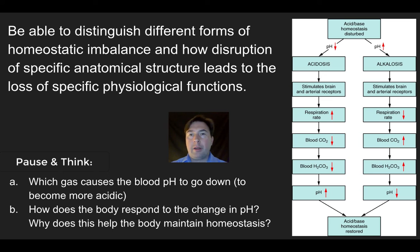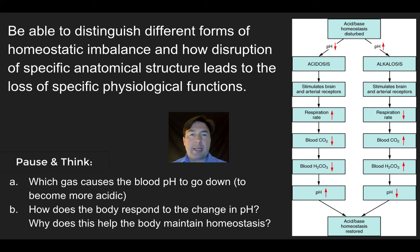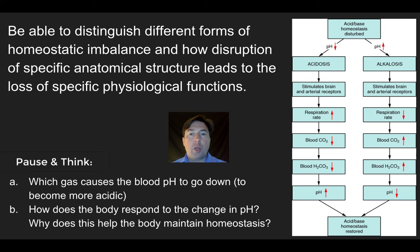Now let's consider homeostasis. The body must maintain acid-base balance. Acidosis is when the bloodstream becomes acidic and pH is driven down. Alkalosis is when pH goes up and tissues become basic. Focusing on acidosis: what gas causes blood pH to go down and makes blood more acidic? And how does the body respond to that change in pH to maintain homeostasis?